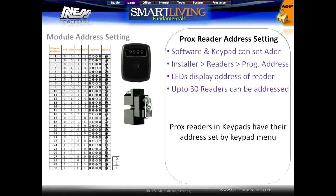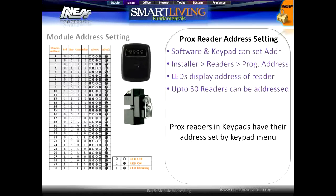Prox readers can be addressed from the keypad or software. Changing the prox reader address requires an EM format key or card, which does not have to be programmed into the system but needs to be read by the card reader. To change the address using a keypad, enter install program mode, go to Readers, then Program Address — the current address will be displayed on each reader. Present a card or fob to the reader to cycle through the address options, referring to the address setting table included with your Smart Living panel. Once all readers have been addressed, simply exit reader address mode from the keypad.